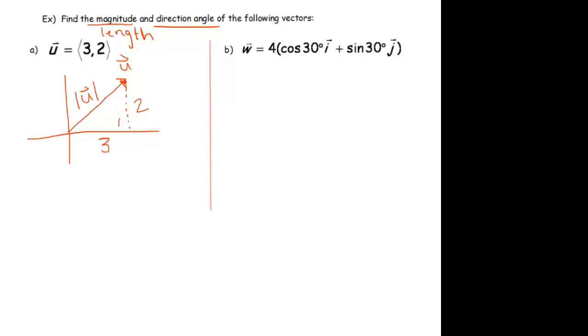Just use the Pythagorean theorem. 3 squared plus 2 squared equals magnitude of u squared. And this left side turns into 13. And so, if we square root, we get the magnitude.